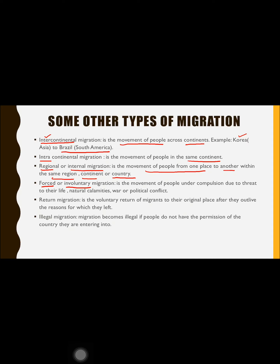Forced migration, also known as involuntary migration, occurs when people are compelled to move due to threats to their life, war, natural calamities, or political conflict. There is no element of choice involved — people are forced to leave their country or region and move somewhere else. This is known as forced or involuntary migration.